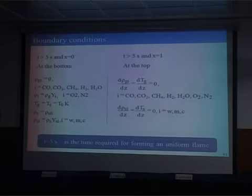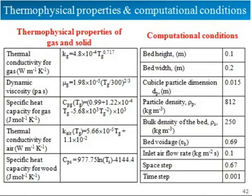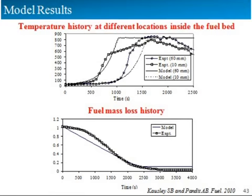It is not necessary for each one of you to do this. These are the typical parameters or properties which are required — thermal conductivity, viscosity, specific heat, thermal conductivity of air, specific heat and capacity of wood. These are the typical dimensional details.